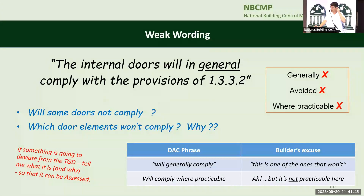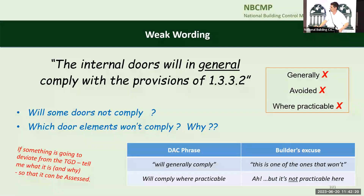Weak wording — one of my favourites: 'Internal doors will generally comply with the provisions of 1.3.3.2.' Well, the consultant knew what he meant, but I'm not sure. Does that mean doors will in general comply, so some will and some won't? Or does it mean all doors will kind of comply but some bits mightn't? You can guarantee if you go to site and the door is wrong, the builder will say 'this is one of the doors that generally didn't comply.' Or 'it'll comply where practicable' — 'well, it wasn't practical here.' Then you're back into a panto: 'oh yes it is, oh no it isn't.' Wordings like 'generally' or 'where practicable' shouldn't be accepted because there's wriggle room for the builder. If something deviates from TGD, tell me what it is and I can either agree or disagree.